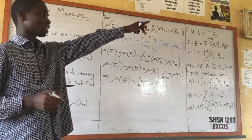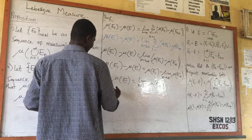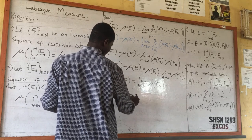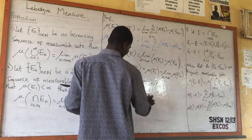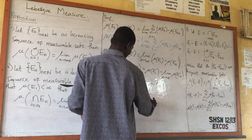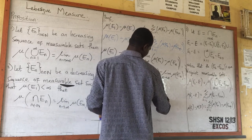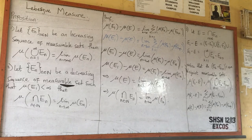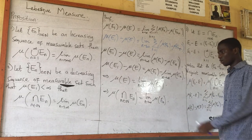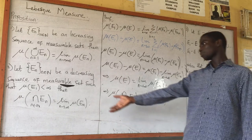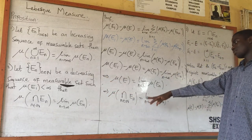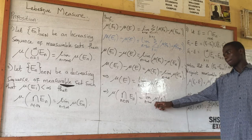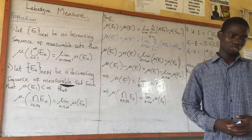By rearranging — measure of E_1 cancels on both sides — we are left with: measure of E equals the limit as N goes to infinity of the measure of E_n. Substituting back, E is the intersection, so the measure of the intersection of N in N of E_n equals the limit as N goes to infinity of the measure of E_n. That is the proof of the second proposition.